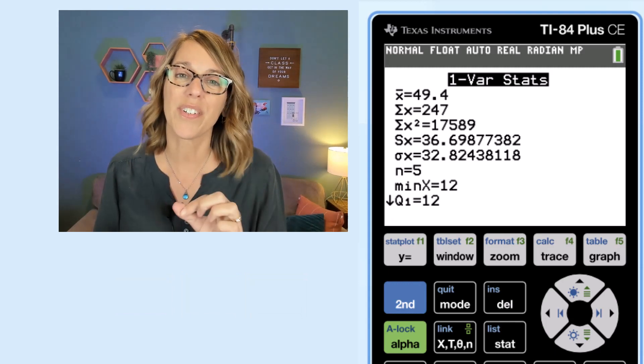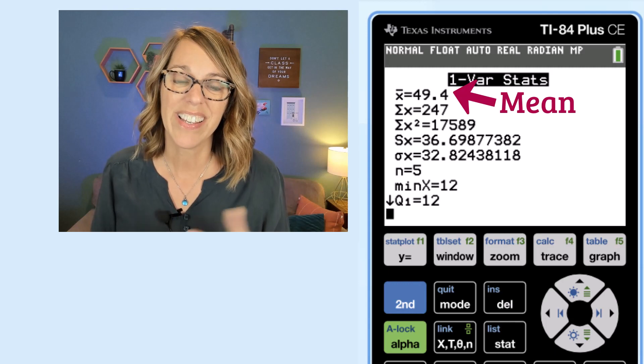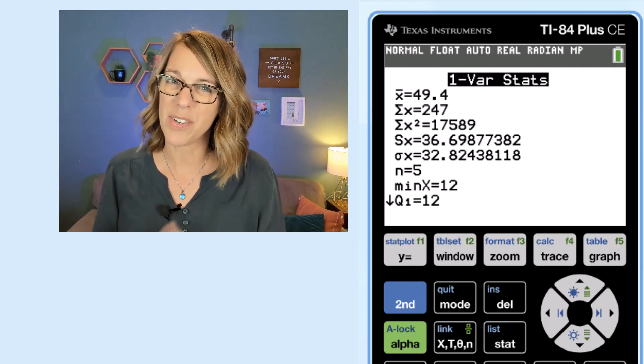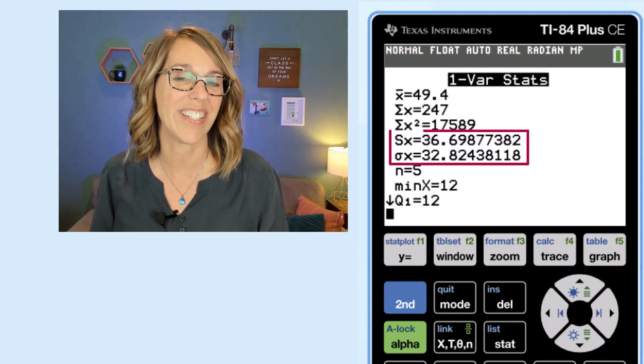Now that very first measure, 49.4, is our mean. The next two, the sum and the sum of the data value squared, I don't really use, but we do have our standard deviations next.